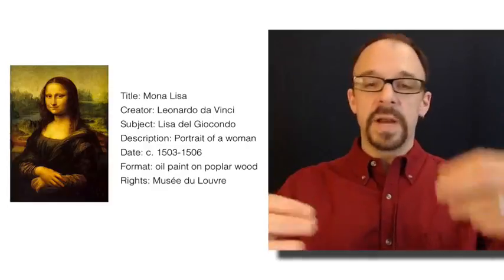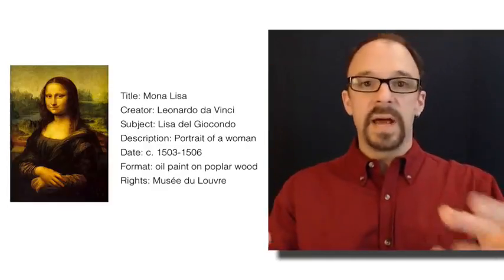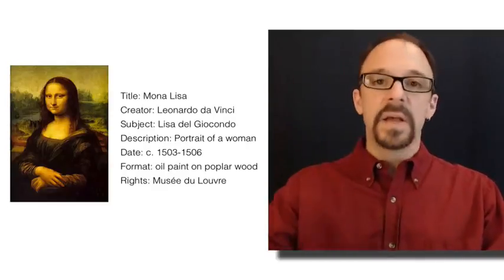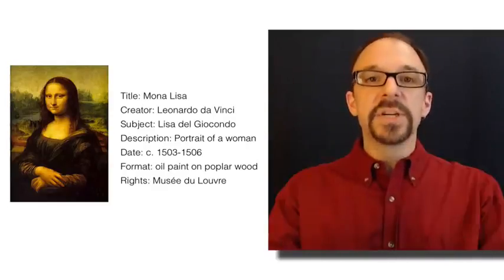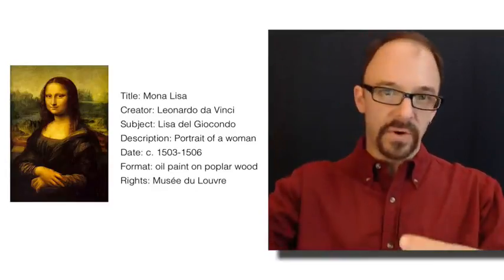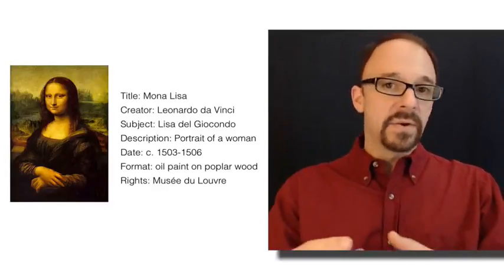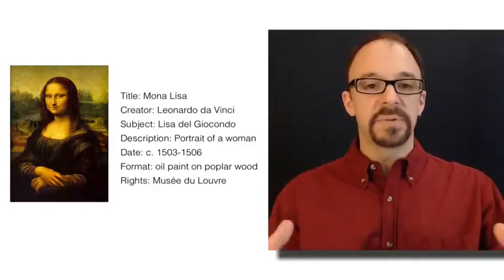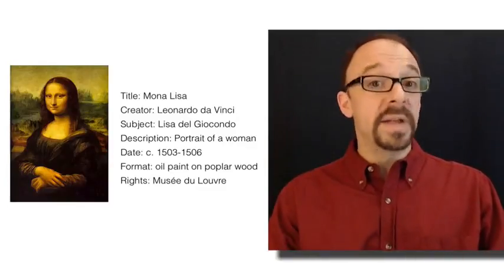And then we could have other entities. We could have the entity the Louvre. We could have the entity oil paint. And then we could establish relationships between the Mona Lisa and those other entities. And we could establish as many entities and relationships between them as we wanted.